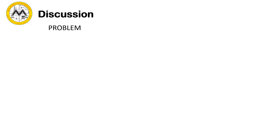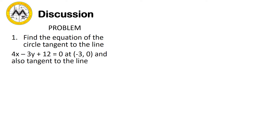Let's have sample problems. Find the equation of the circle tangent to the line 4x minus 3y plus 12 equal to 0 at the point negative 3, 0, and also tangent to the line 3x plus 4y minus 16 equal to 0 at the point 4, 1. This is the case where we are given a tangent line at a given point and another tangent line at another given point. What we are going to do is solve for the equation of the radius, which is perpendicular to the tangent line at the given point. We can find the equation of the radius for both tangent lines, then find the center.